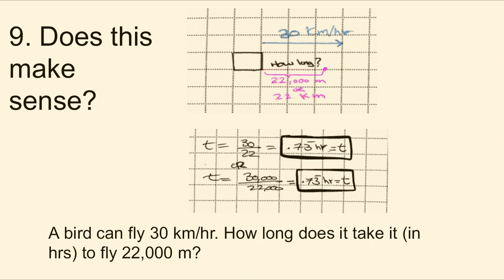Step nine, finally check to see if your answer makes sense. The bird flies at 30 kilometers every one hour and 22 kilometers is less than 30 kilometers. Therefore, our answer should be less than one hour, which it is at 0.73. So yes, the answer does make sense and we are good, assuming no mathematical mistakes were made or you didn't punch the wrong number into the calculator, which is a common mistake.